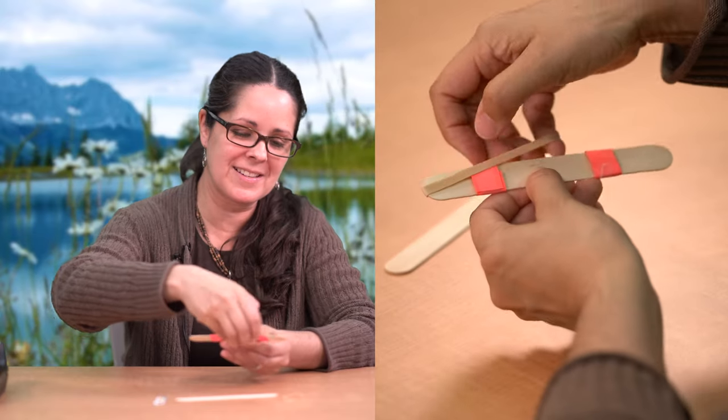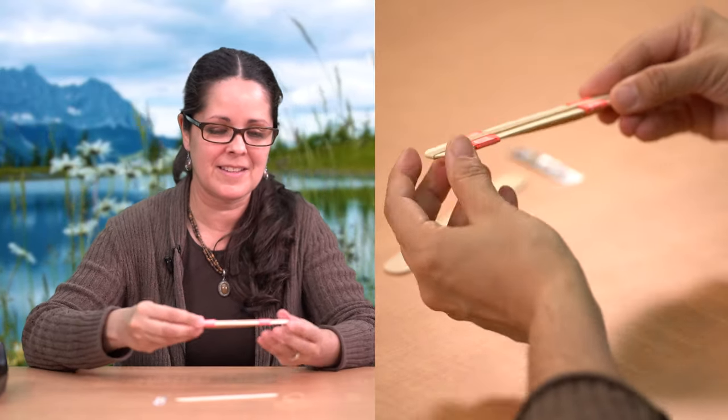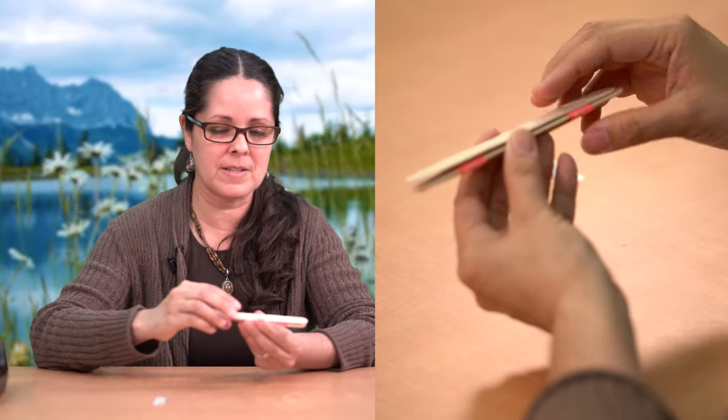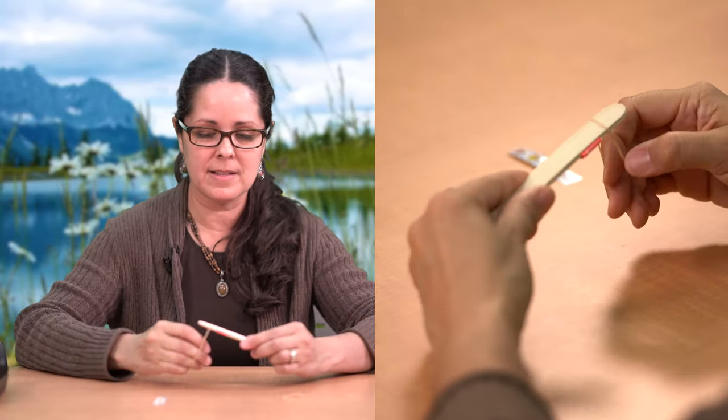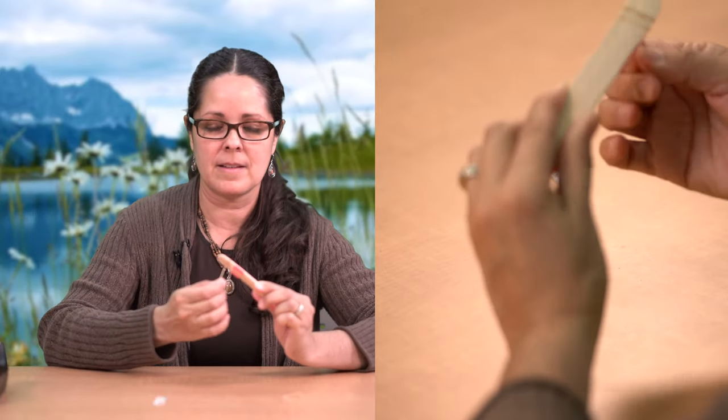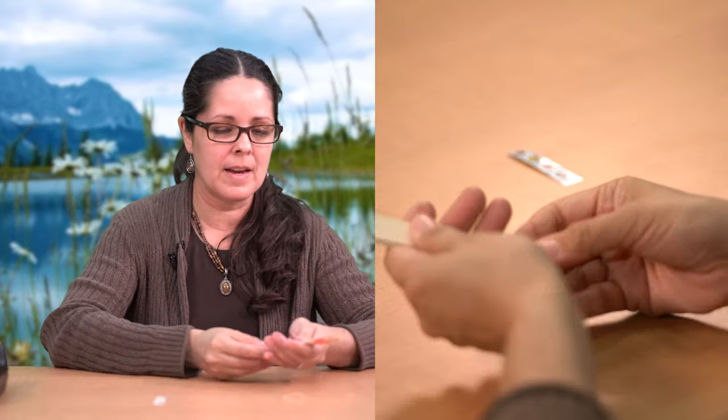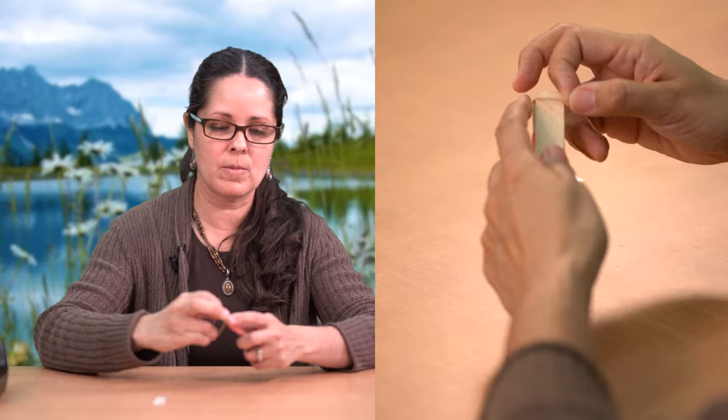Let's take the large rubber band and wrap it around one popsicle stick. And now lay your other popsicle stick on top. Now we'll take one small rubber band and we'll wrap it around the end on one side. And then we'll do the same on the other side with the other small rubber band.